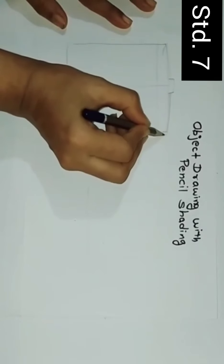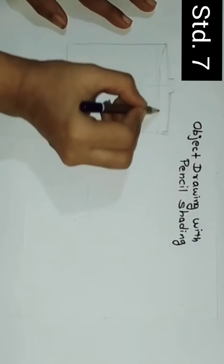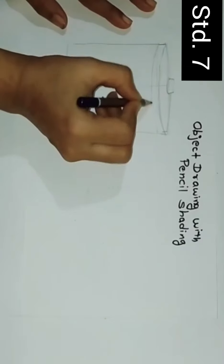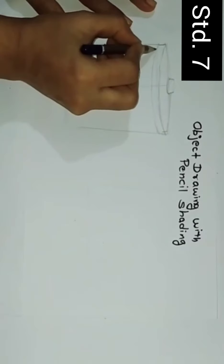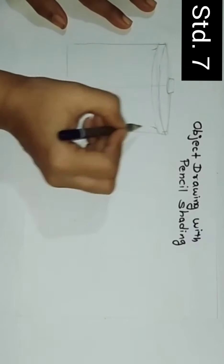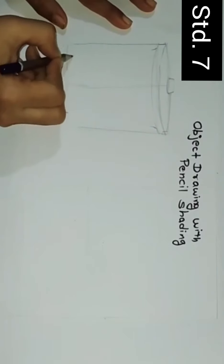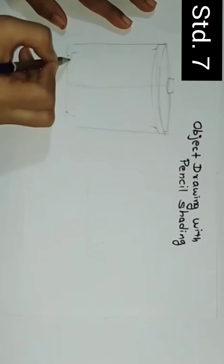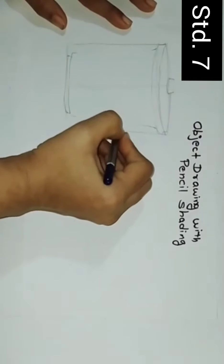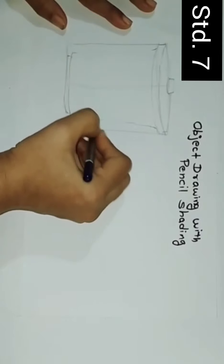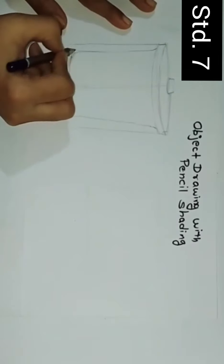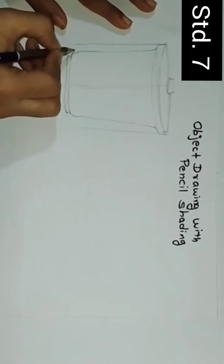It is rectangular in shape and we will divide it into two parts with a vertical line. It is a dustbin — a basic shape of a dustbin. It is a plastic dustbin; man-made objects are made up with plastic.